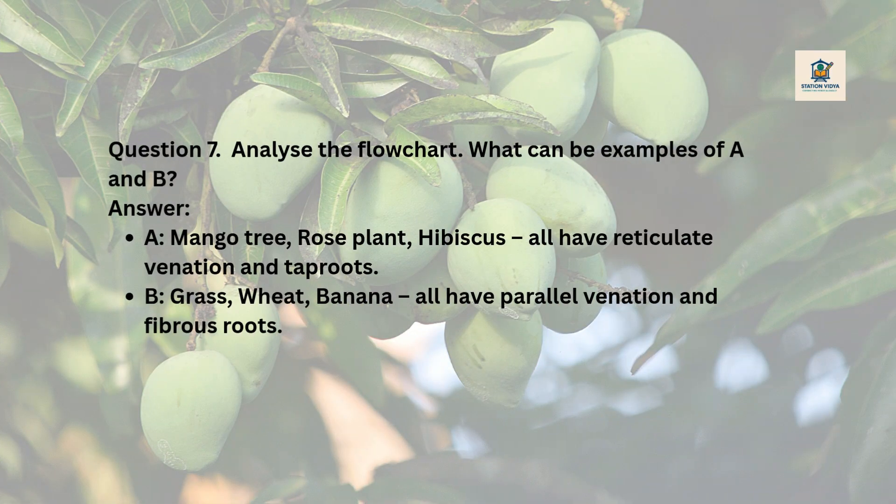Question 7: Analyze the flowchart. What can be examples of A and B? Answer: A — mango tree, rose plant, hibiscus — all have reticulate venation and taproots. B — grass, wheat, banana — all have parallel venation and fibrous roots.